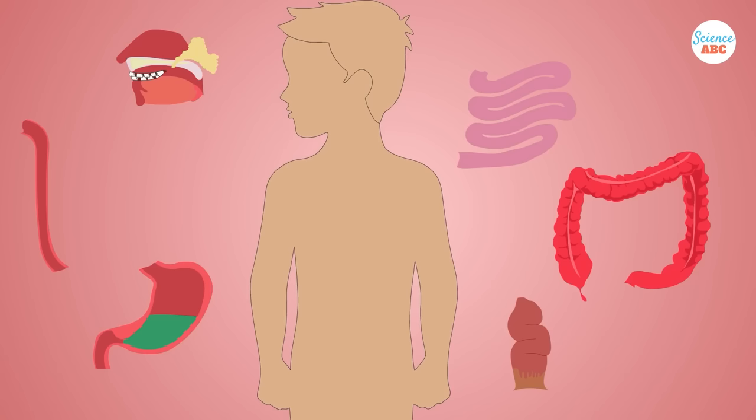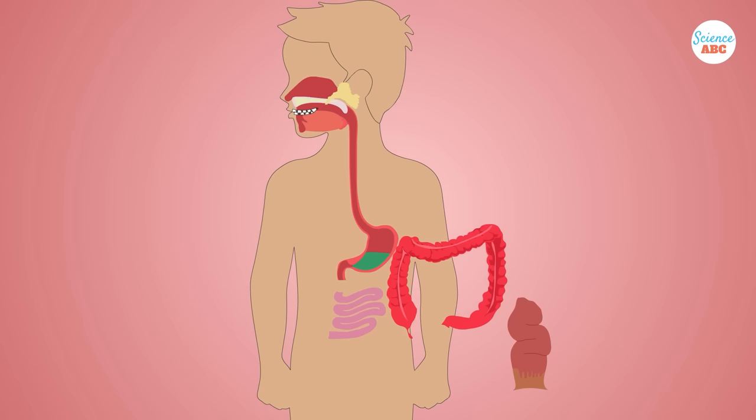There are seven main organs in the digestive system—the mouth, esophagus, stomach, small intestine, large intestine, rectum, and anus.